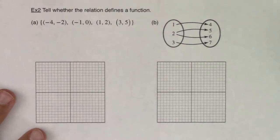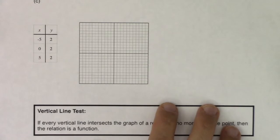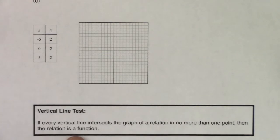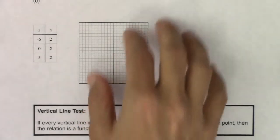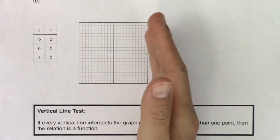I want to talk about the vertical line test. I defined it at the bottom of this paper, so let me scroll all the way down. The vertical line test says: if every vertical line intersects the graph of a relation in no more than one point, then the relation is a function. I'm going to show you how to apply it to graphs of relations and determine yes or no, are they functions.